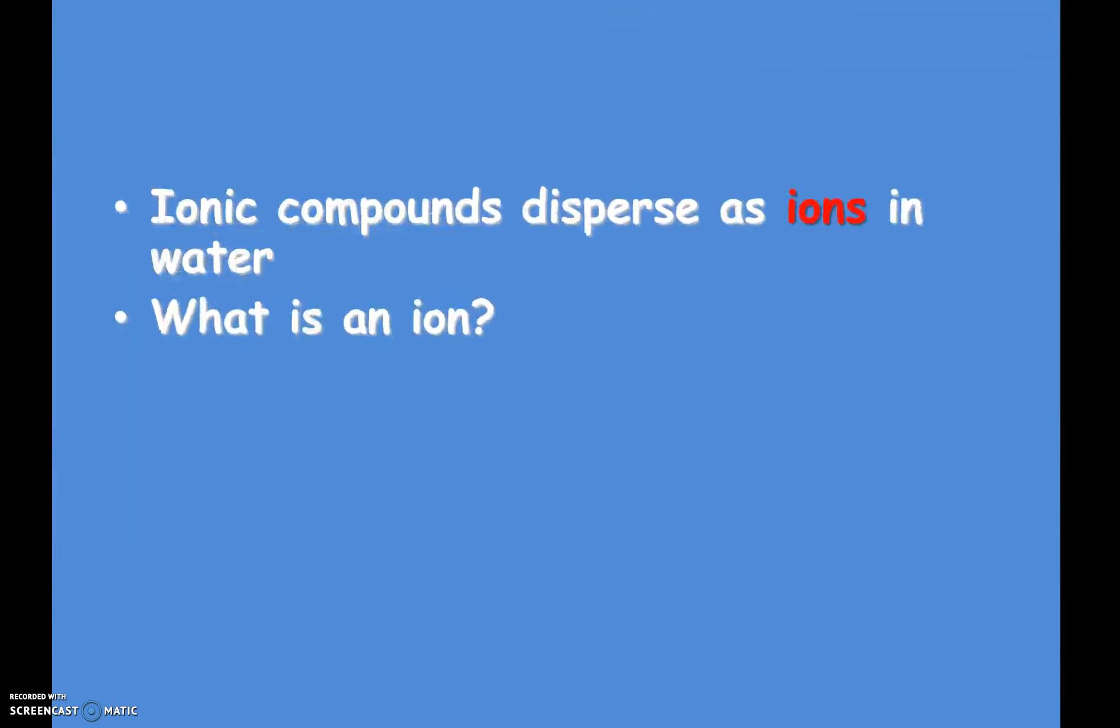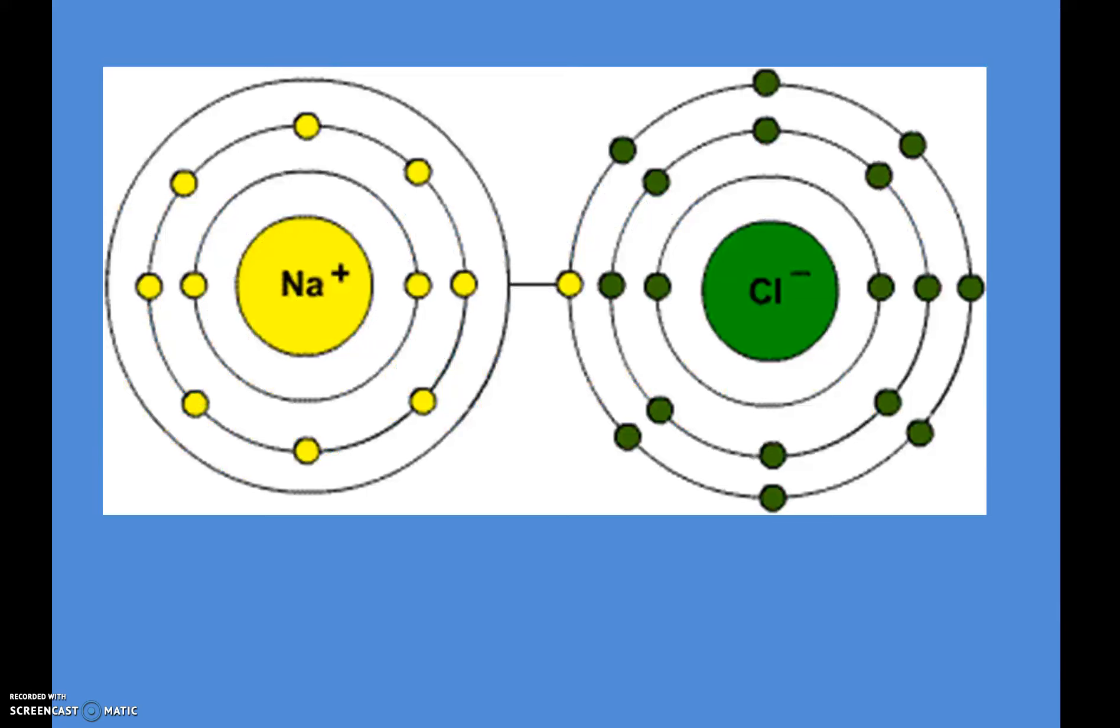Salt is actually an ionic compound because it's two ions held together with an ionic bond. An ion is an atom that is not neutral. It has a strong positive or negative charge to it. So let's take a look at salt to understand how this would work. Salt is sodium with chlorine. We call it sodium chloride.